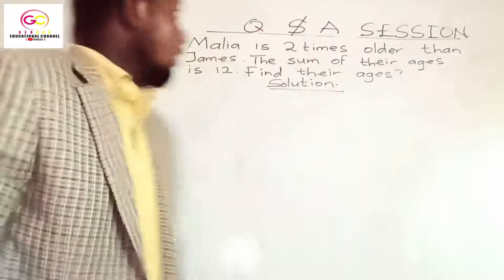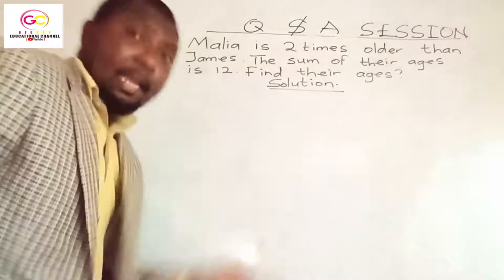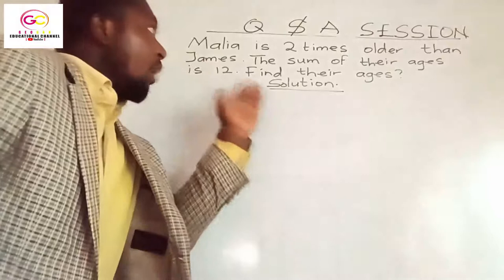Good. Now this is the question: Malia is two times older than James. The sum of their ages is 12. Now find their ages.